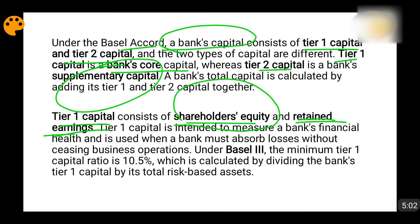Retained earnings — that is the earnings which remain with the bank. For example, the bank is doing operations and earning profit. How does it earn profit? The main business of the bank is accepting deposits and lending money. When it accepts deposits, it gives interest to those depositors. When the bank lends to other people, those people pay interest to the bank, and the interest rate they pay will be more than the interest rate the bank offers to its depositors.